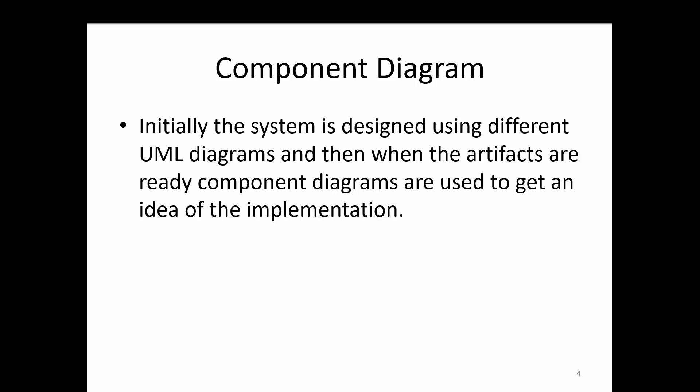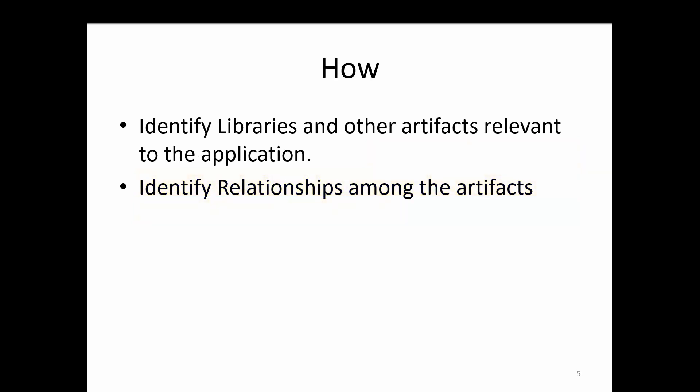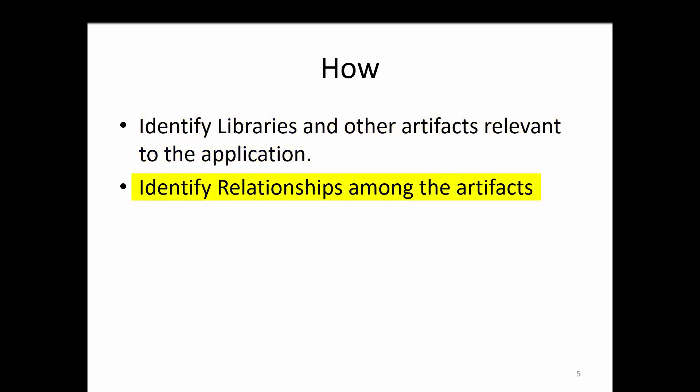Component diagram is a special type of UML diagram. When we are drawing a component diagram, first we will have to identify all the physical artifacts of the system, because the component diagram describes the physical artifacts of the system. We will have to identify the libraries and other artifacts relevant to the application, then identify what are the relationships among those artifacts, and then model those with the component structure.